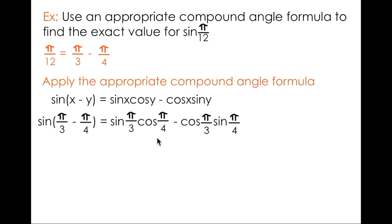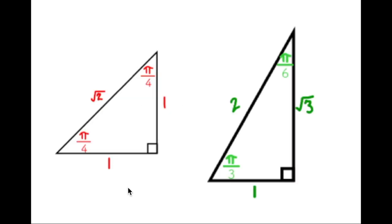The sine of pi over 3, the cosine of pi over 4, the cosine of pi over 3, and the sine of pi over 4 are pretty easy to determine exact values for using the special triangles. You'll also need to know how to use the sine and cosine ratios, but if you're watching a video on compound angle identities, I'm going to assume that you know SOH CAHTOA.